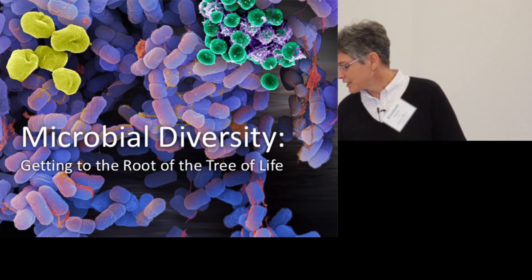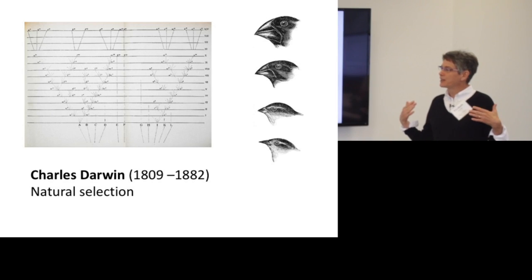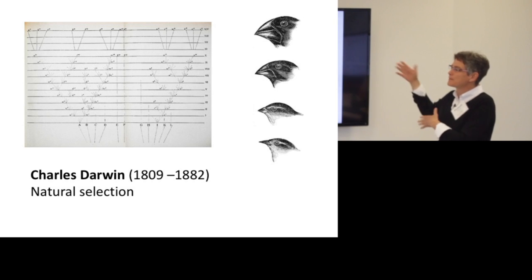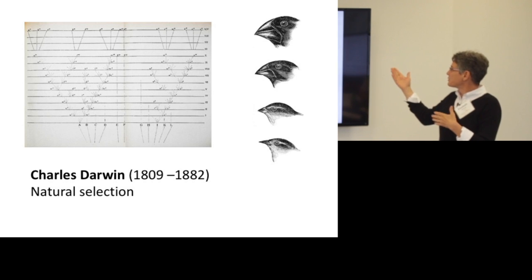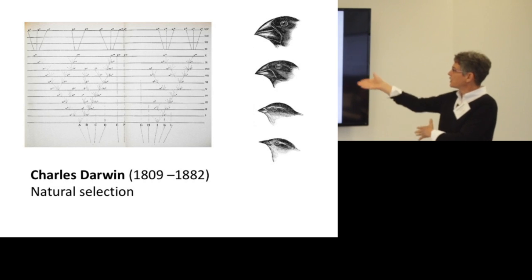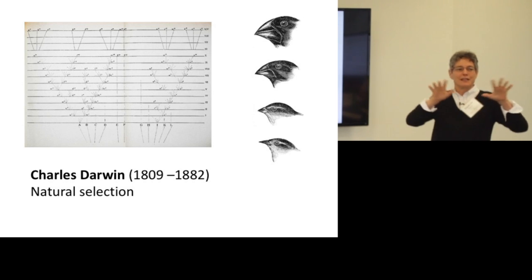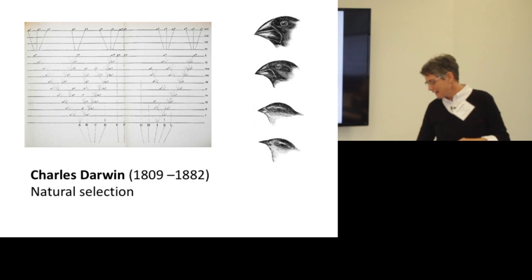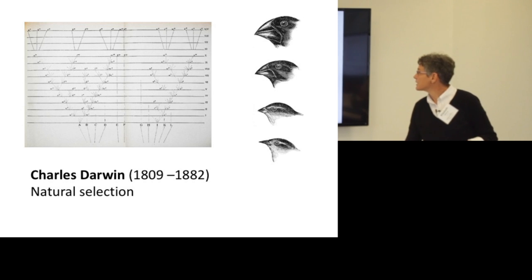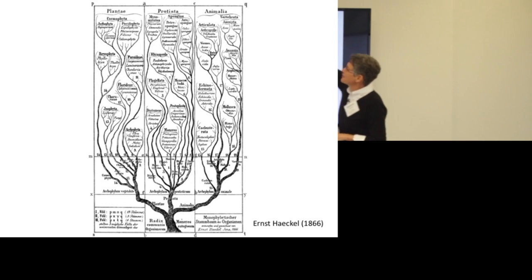Just to get us all on familiar footing: we've all heard of Charles Darwin and the notion that the environment selects — organisms adapt and evolve to the environment they live in. With what types of seeds they're eating, the shape of the beak would change. This concept of a phylogenetic tree, which Charles Darwin drew, shows organisms evolving from a common ancestor and diverging to occupy all available niches on the planet. This is true for birds and all kinds of organisms.